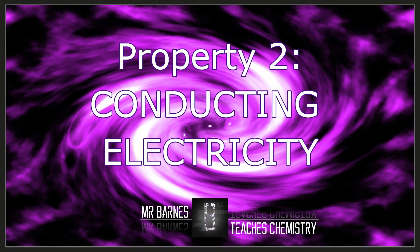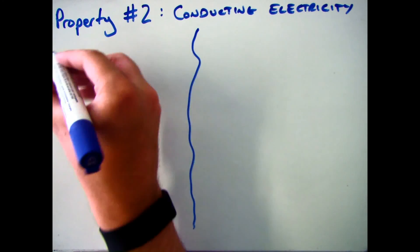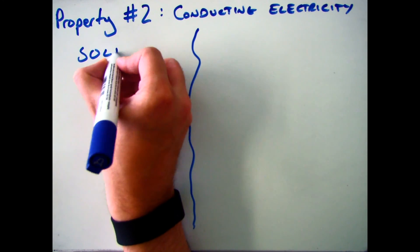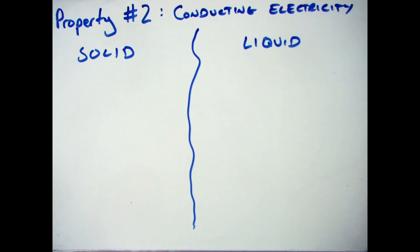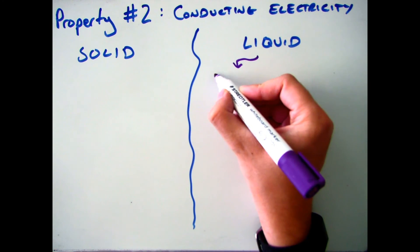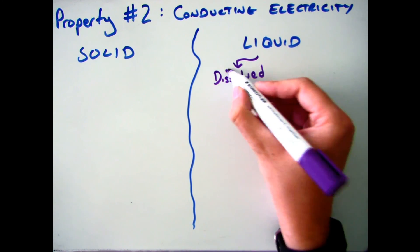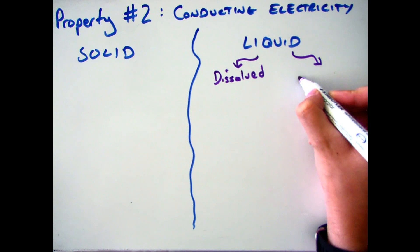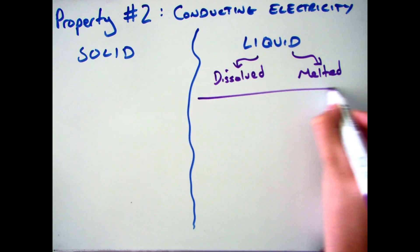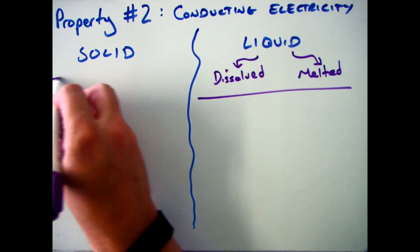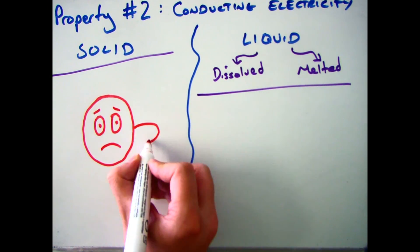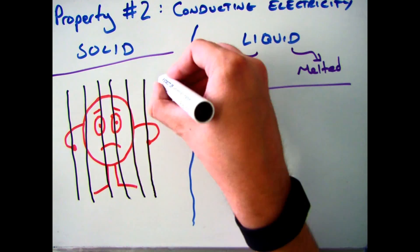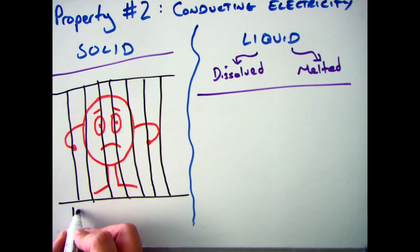The second main property we want to have a look at is whether they conduct electricity or not. There are two things you need to look at here: whether they conduct when they're a solid or whether they conduct when they're a liquid. When we talk about liquid, we mean whether they are dissolved in solution or melted. A key thing when talking about whether ionic compounds can conduct is whether the ions are free to move or not.